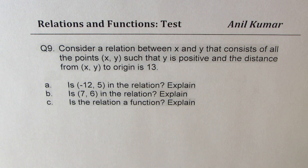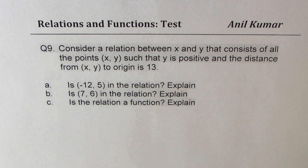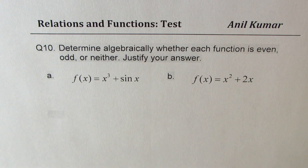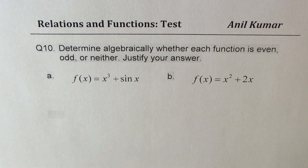Question number nine: consider a relation between x and y consisting of all points (x, y) such that y is positive and the distance from (x, y) to the origin is 13. There are three parts: is (-12, 5) in the relation? Is (5, 7.6) in the relation? Is the relation a function? Question number ten: determine algebraically whether each function is even, odd, or neither — justify your answer. f(x) = x³ + sin(x) and f(x) = x² + 2x. You can pause the video, answer these questions, and then look into my suggestions.